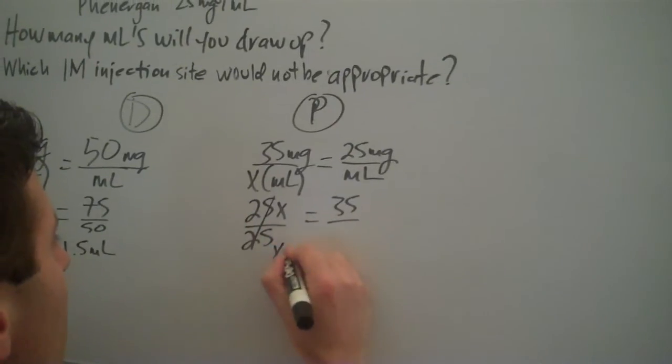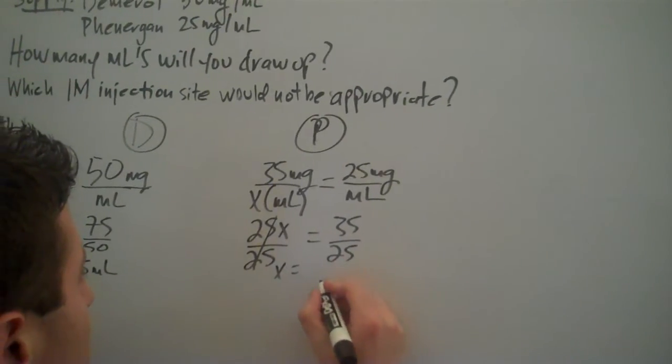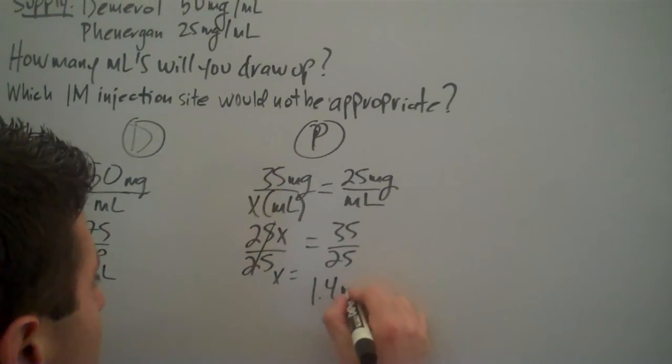Divide. These cross out. x equals 35 over 25. When you divide these two, you will get 1.4ml.